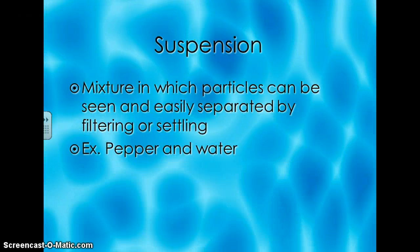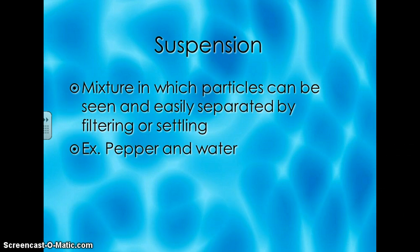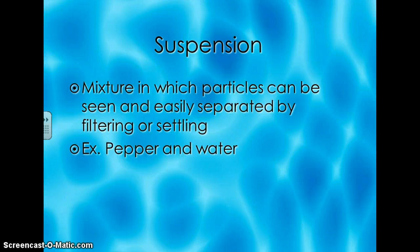One type of mixture is called a suspension. In this particular type of mixture, particles can be seen very easily, and they can easily be separated from the liquid through filtering or through the process of settling. An example of this would be if you were to put pepper in a glass of water — you could easily see that the pepper was there, and you could take it out by filtering it or waiting for it to settle.